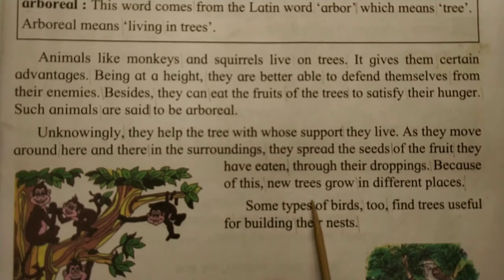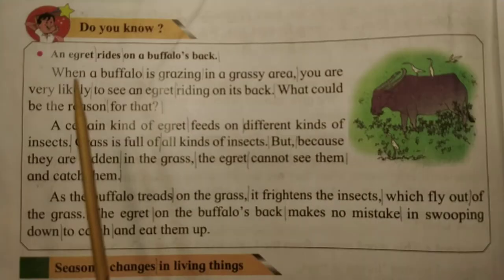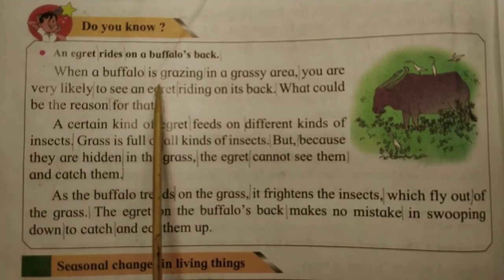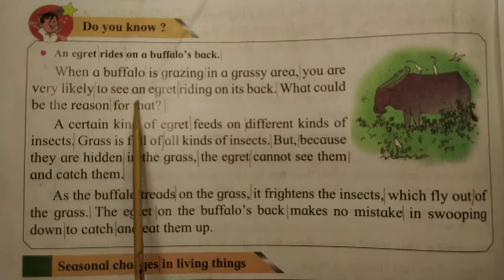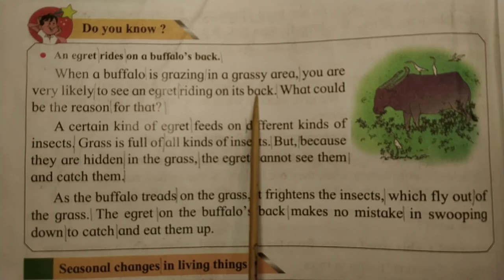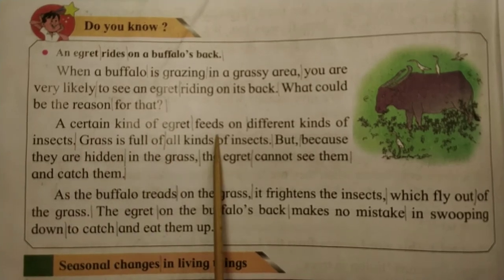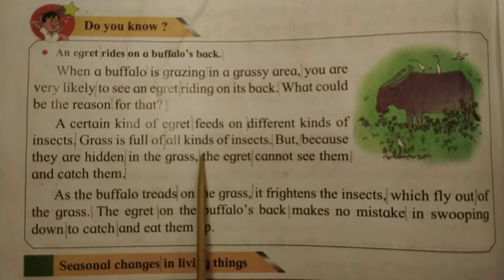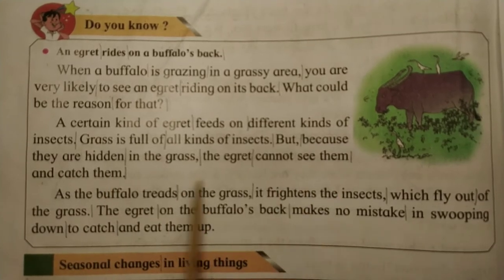Because of this, new trees grow in different places. Some types of birds find trees useful for building their nests. Do you know an egret rides on a buffalo's back? When a buffalo is grazing in a grassy area, you are very likely to see an egret riding on its back. What could be the reason? A certain kind of egret feeds on different kinds of insects, and grass is full of all kinds of insects — but because they are hidden in the grass, the egret cannot see them and catch them.